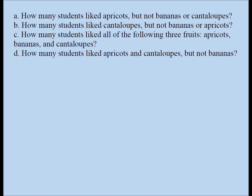Based on those facts, we need to answer the following questions: How many students liked apricots but not bananas or cantaloupes? How many students liked cantaloupes but not bananas or apricots? How many students liked all three fruits — apricots, bananas, and cantaloupes? How many students liked apricots and cantaloupes but not bananas? We are going to use a Venn diagram involving three sets to solve this problem.